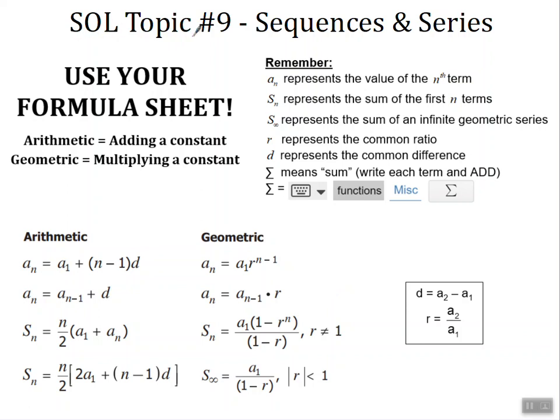And here is SOL topic number nine, sequences and series. For this topic it is very important for us to use our formula sheet. Our state test will give us all of our arithmetic formulas and all of our geometric formulas. It will also give you these five symbols for the sum of the parts of our formulas. Remember for arithmetic we are adding a constant and for geometric patterns we are multiplying a constant.